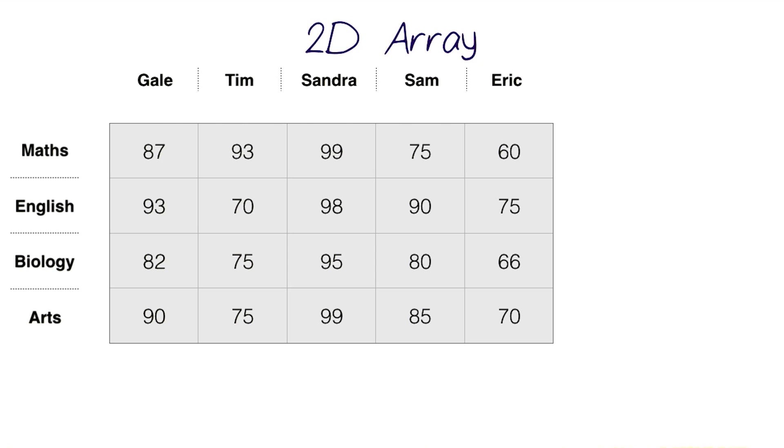That's why when you're trying to deal with data that looks something like a table or a grid, Java offers something called a two-dimensional array. You can think of a two-dimensional array as an array of arrays.